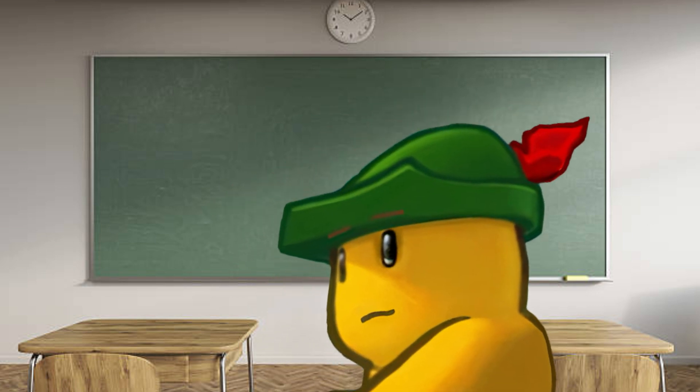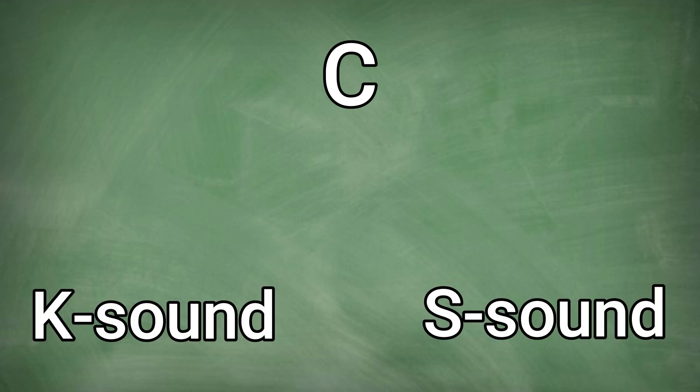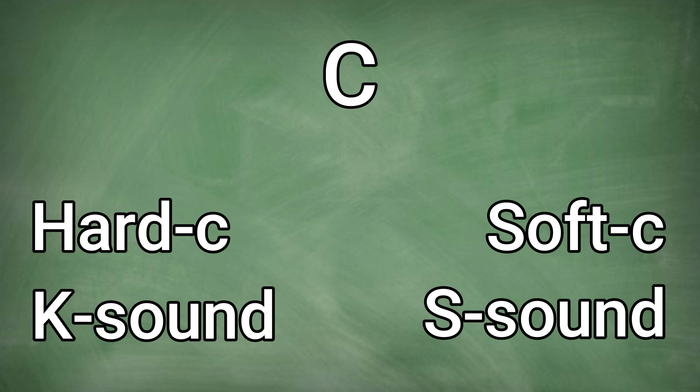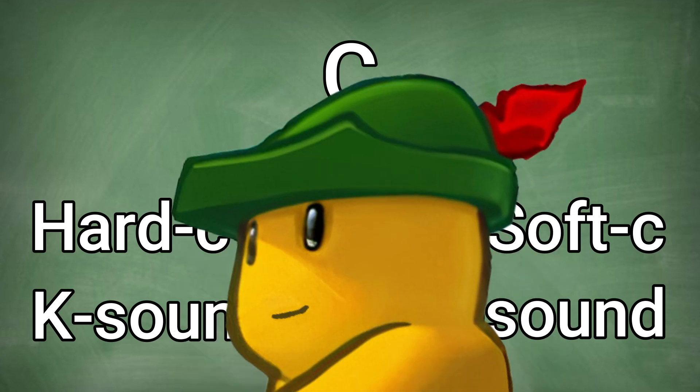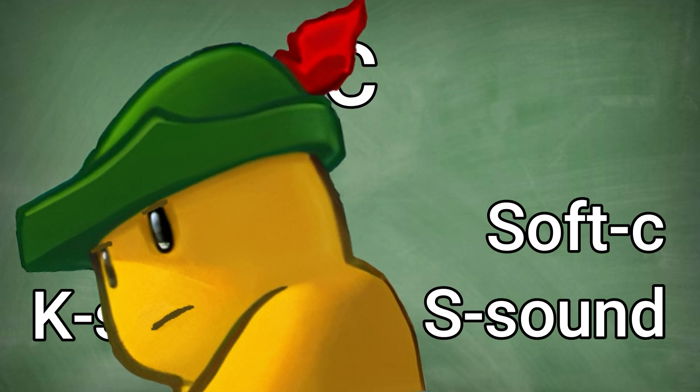The letter C has no place in the alphabet at all. C usually makes either an S sound or a K sound. That being the hard and soft C. You know which letters also make an S and K sound? The letters S and fucking K.